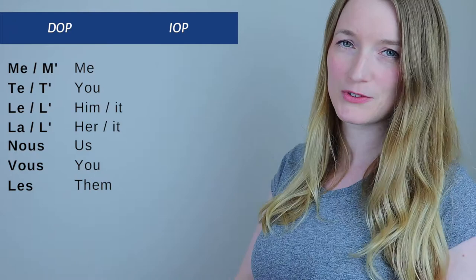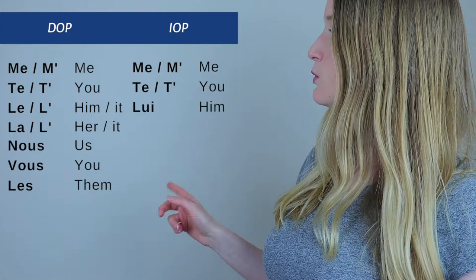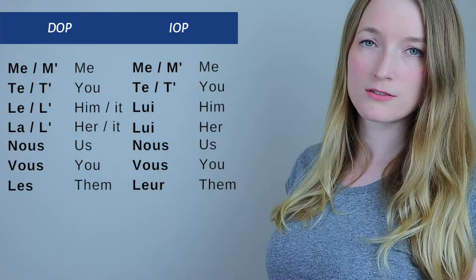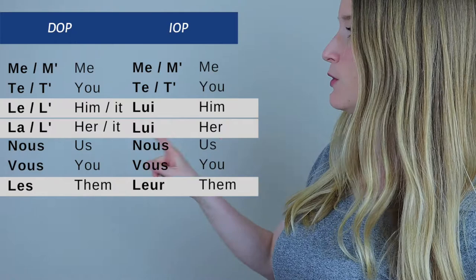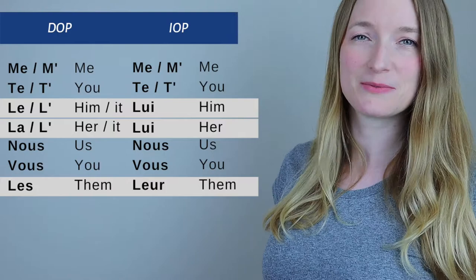Now let's see the IOP. We have: me, m', te, t', lui, lui — the same for men and for women — nous, vous, leur. Let's underline the different ones just to remember. So we have le, la, l' versus lui, lui — lui and leur. Those are the only ones that are different; the other ones stay the same. This is important for the order that we are going to use them.